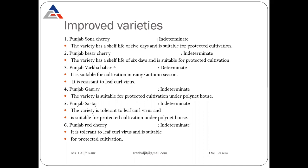Now we will discuss some varieties of tomato. First is Punjab Sona Cherry — its growth habit is indeterminate, it has a shelf life of five days, and it is suitable for protected cultivation such as in a greenhouse or poly frames. Punjab Asha Cherry is again indeterminate type, has a shelf life of six days, and is also suitable for protected cultivation.